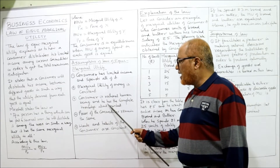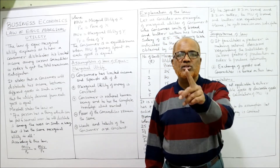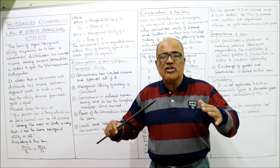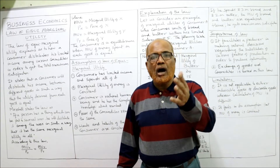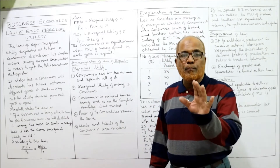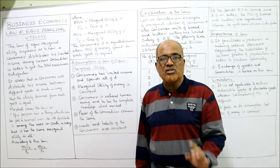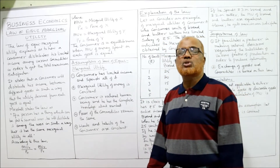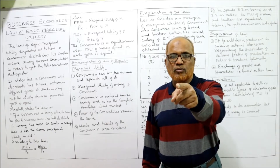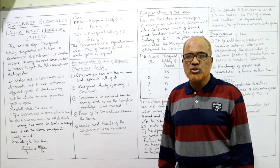Third, the consumer is a rational human being with complete knowledge about the market. The person on whom we apply equi-marginal utility should be a normal, rational person — not abnormal. He must have perfect knowledge of market conditions and the prices of commodities, which should remain unchanged. Fourth and lastly, the wants and habits of the consumer are constant — during the application of this law, the person's tastes, habits, and preferences should not change.